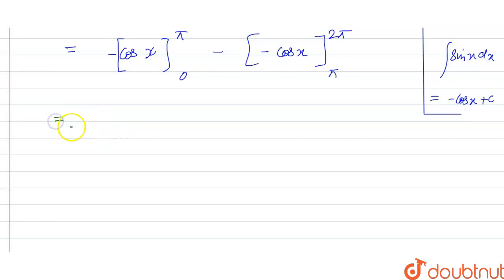So if we further solve, we have upper limit minus lower limit, that is cos π minus cos 0, and similarly we have this minus and minus will be equal to plus of cos 2π minus cos π.